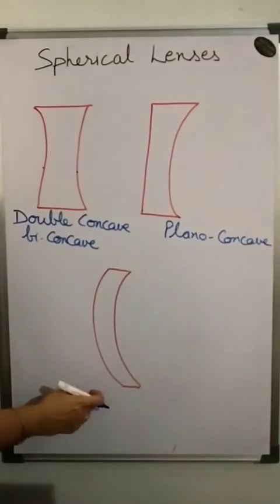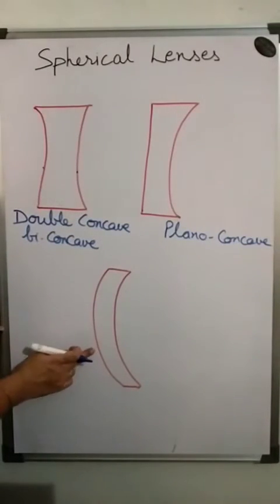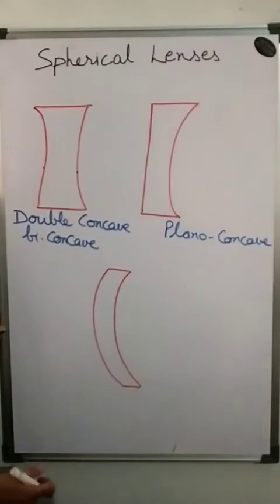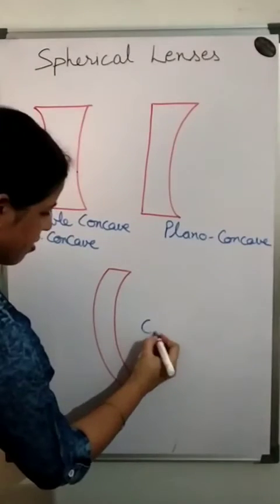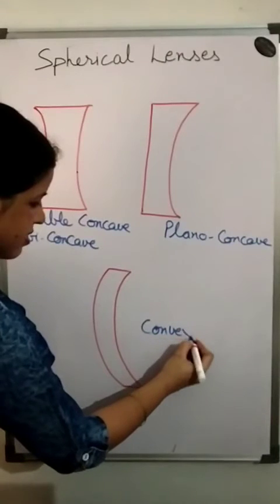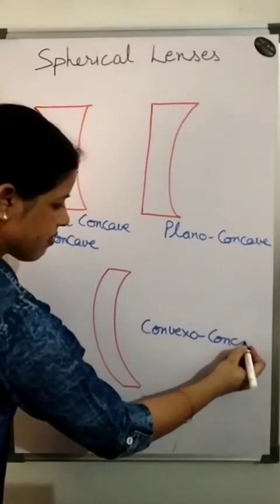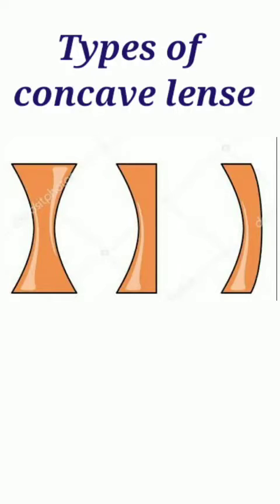The third type has one convex side and one concave side, so we call it convexo-concave. To summarize the three types of concave lenses: bi-concave, plano-concave, and convexo-concave.